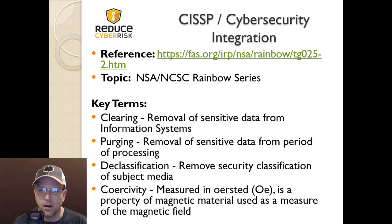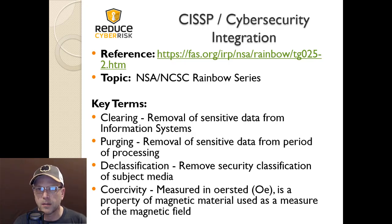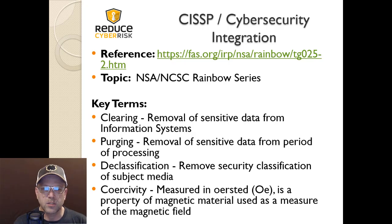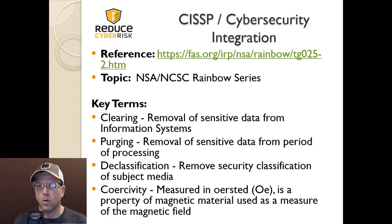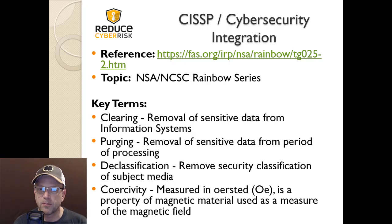There are some key terms we're going to focus on today around data remnants. The first is clearing — this is removing sensitive data from an information system. If you have data you want to remove, this is how you clear it from the device. Another one is purging — this is removal of sensitive data from the period of processing, actually removing it from the processing period occurring on that device, hard drive, or disk.